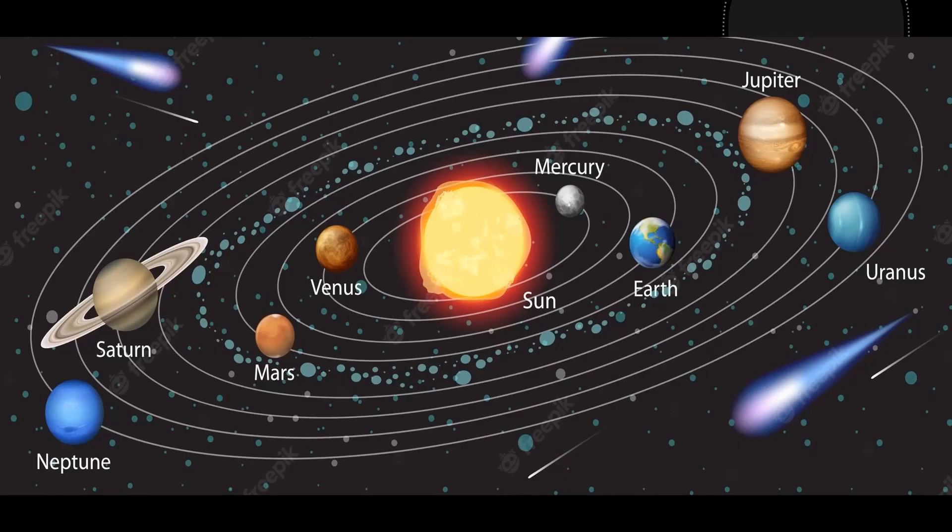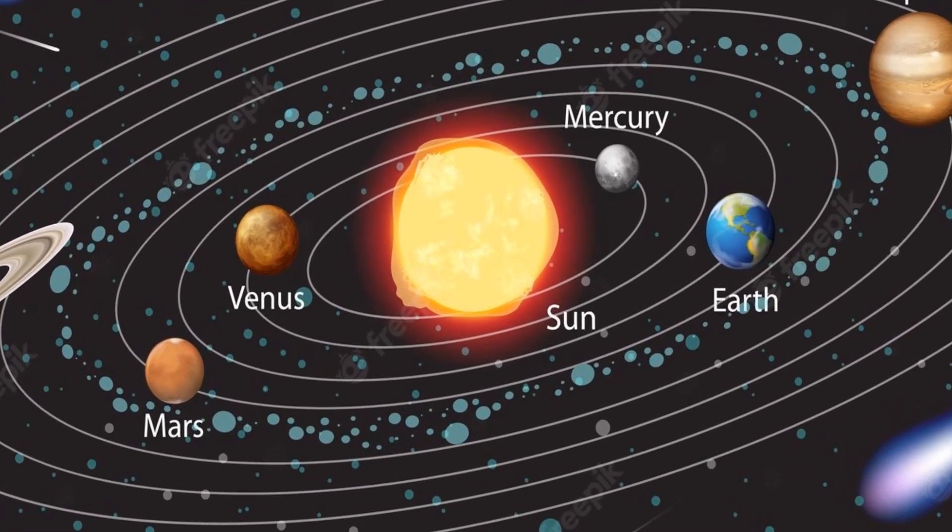In the solar system, there are eight planets orbiting around the Sun.